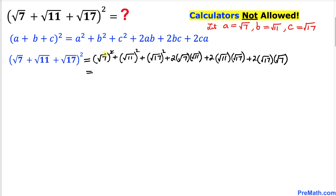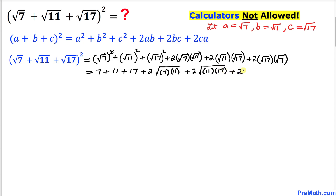Now let's simplify. The square and square root undo each other, so we get 7, likewise 11, plus 17. Over here I can write 2 times square root of 7 times 11, plus likewise 2 times square root of 11 times 17, and finally plus 2 times square root of 17 times 7.